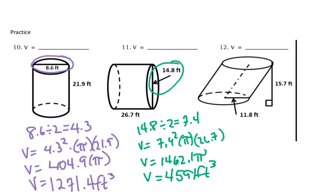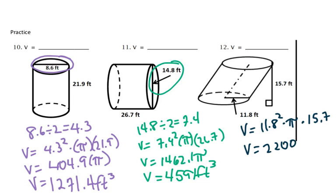In our last example, we do have a radius, so we don't have to divide by 2. Volume equals 11.8 squared times pi times 15.7. We'll get 2,200 pi. We multiply 2,200 by 3.14, and we'll get a volume of 6,908 feet cubed.